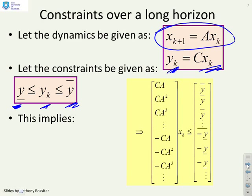Now, if I want to test those constraints, I'm going to need to do it over an infinite horizon. So I've got things like CA x less than y over bar, CA squared x less than y over bar, CA cubed x less than y over bar. And this is going to go all the way up to, if you excuse the abuse of terminology, CA to the infinity, xk less than or equal to y over bar. And you're going to have a similar pattern for all the lower limits.